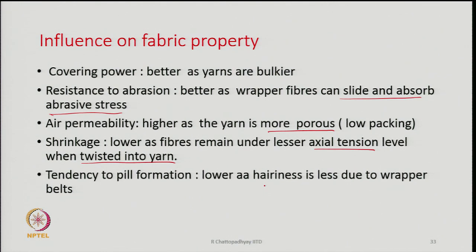Shrinkage depends on the spinning tension under which the yarn was spun. In ring yarn, spinning tensions are always higher due to the balloon, traveller, and ring-traveller friction. Therefore, fibers in the delta zone experience more tension. Because rotor spun fibers undergo lesser axial tension during yarn formation, shrinkage is less. Pilling formation tendency is also lower because hairiness is less due to wrapper fibers and belts.